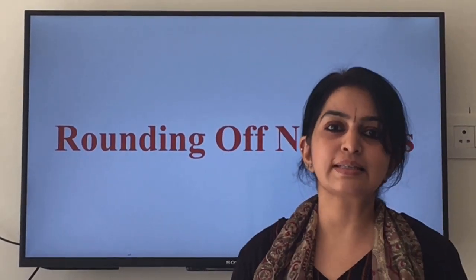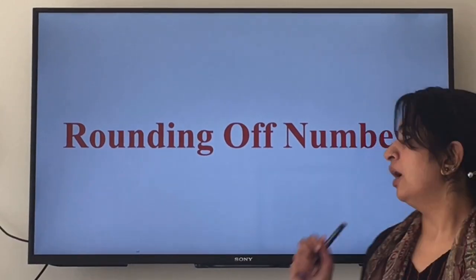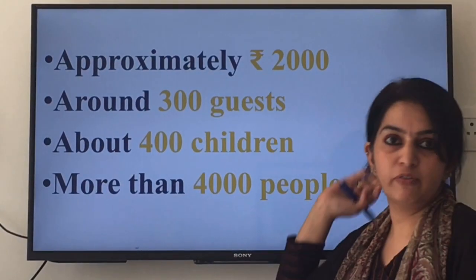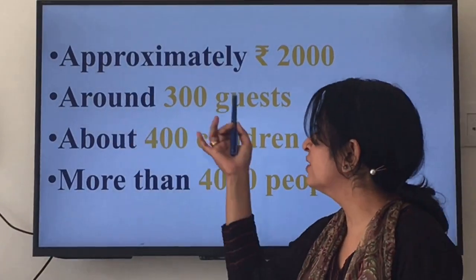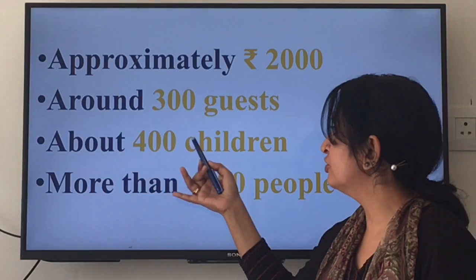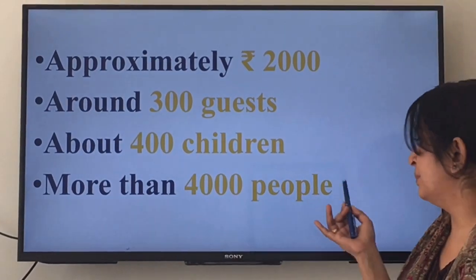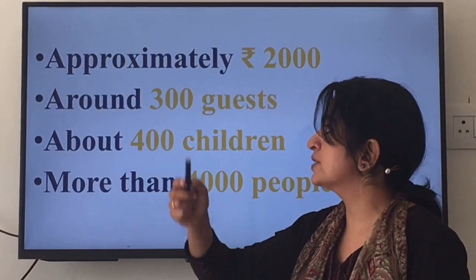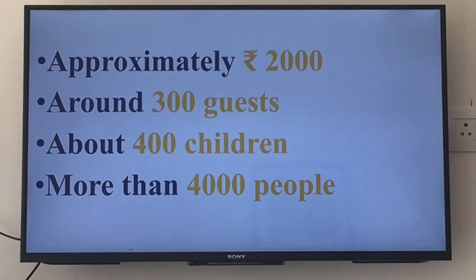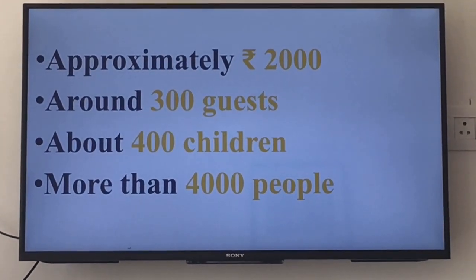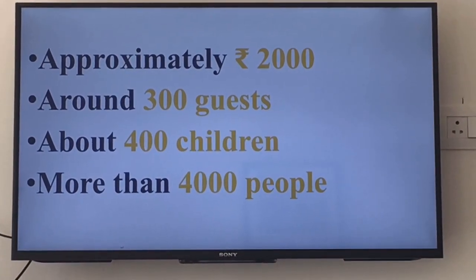Hello everyone. In today's lesson we will learn about rounding of numbers. You must have come across statements like these in everyday life: approximately rupees 2000, around 300 guests attended the function, about 400 children participated in a competition, more than 4,000 people were there. All these terms — approximately, around, about, more than — give us an idea about a number which is quite close to the exact number. The number so rounded is called the estimated number.